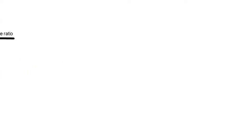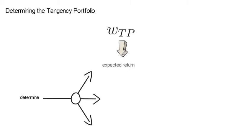Okay, let's pause for a minute. We just talked about three ways to determine the tangency portfolio. Once you have its portfolio weights WTP, you determine its expected return, its volatility, and its Sharpe ratio.